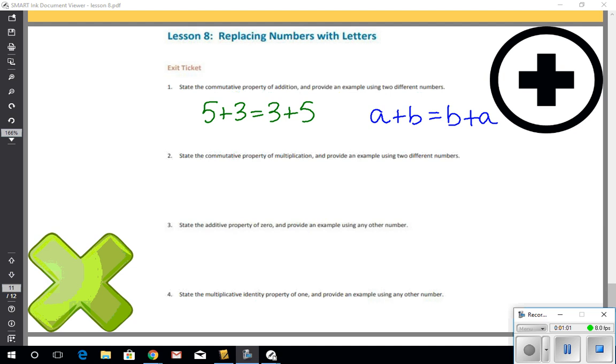Now let's take a look at the commutative property of multiplication. The commutative property of multiplication states that the product, that's the answer to a multiplication problem, stays the same when the order of the factors is changed. So a×b equals b×a, where a and b are any real numbers.